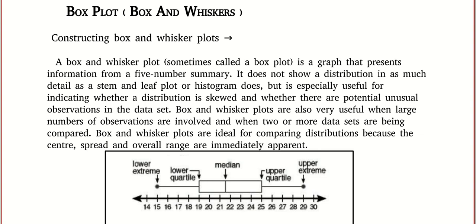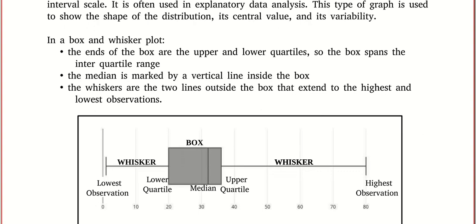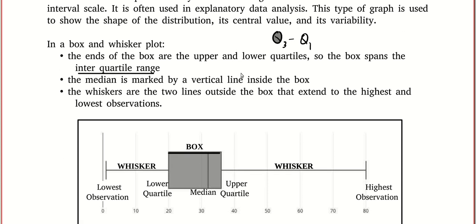One very important thing I forgot to mention: the length of the box will be the interquartile range. Interquartile range means the difference between Q3 and Q1. So basically, the length of the box is the interquartile range. Now let's move on to the next question.